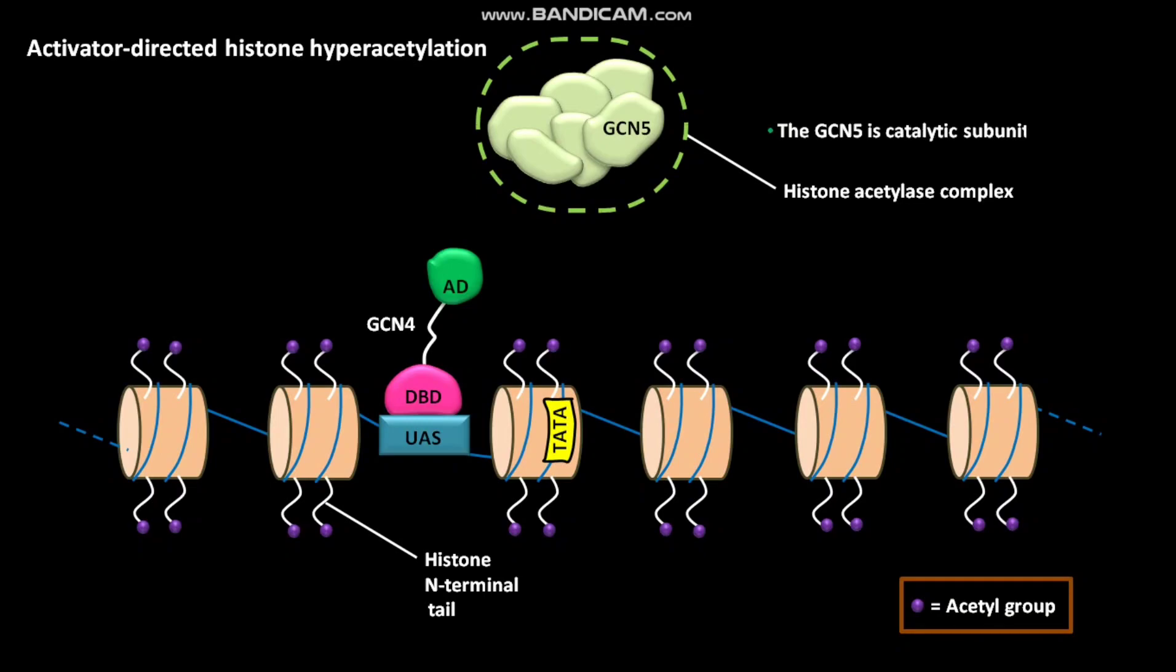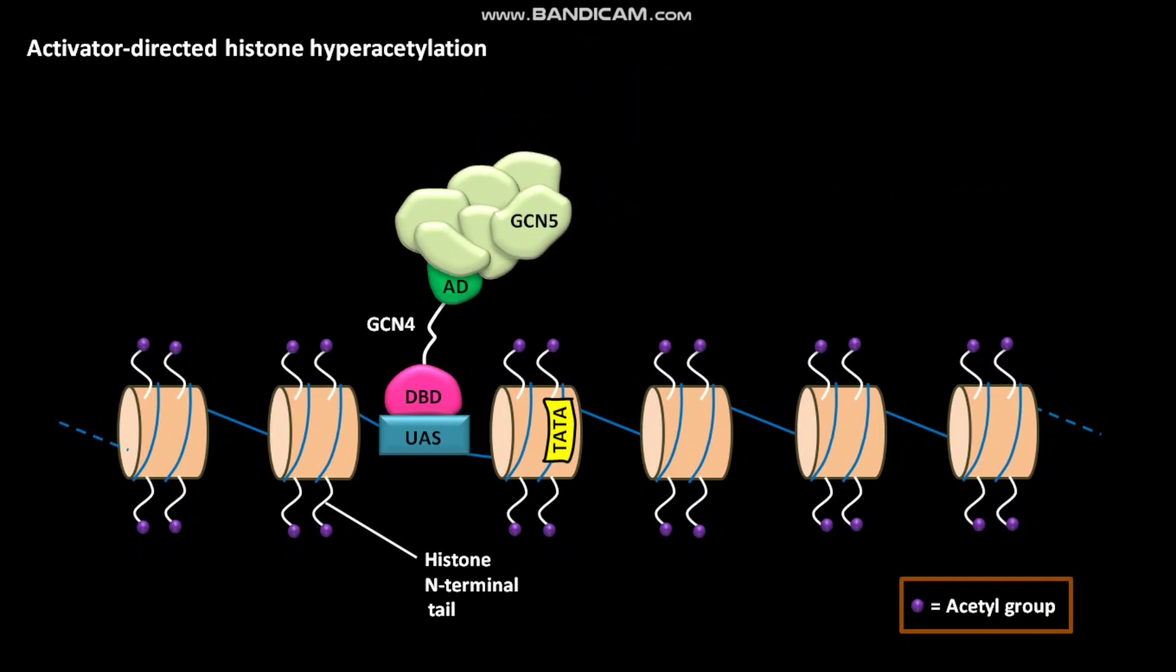The GCN5 is the catalytic subunit. The activation domain or AD of GCN4 then interacts with the histone acetylase complex.